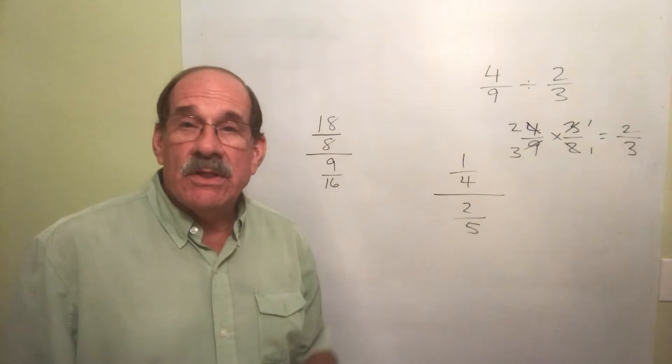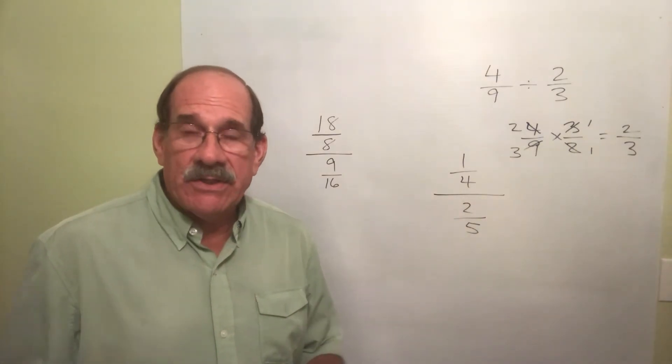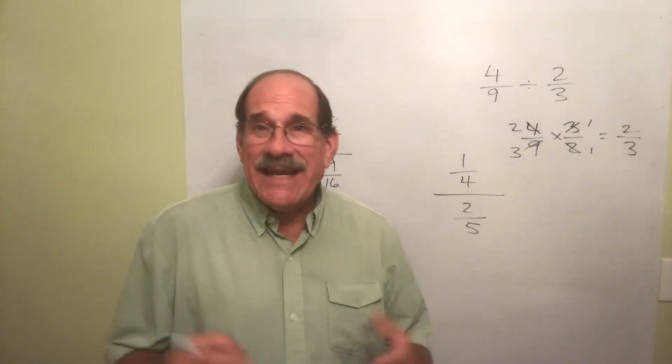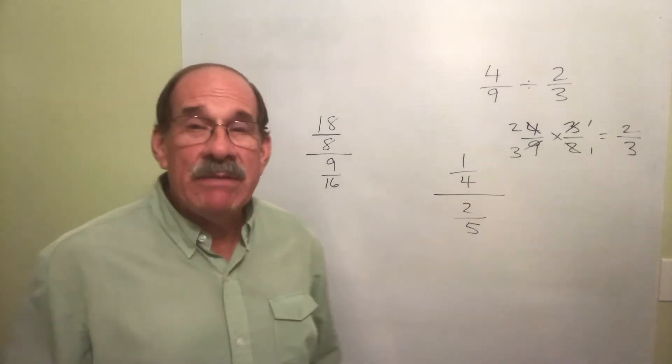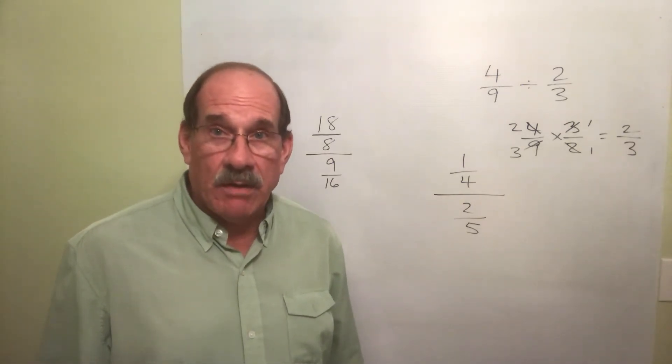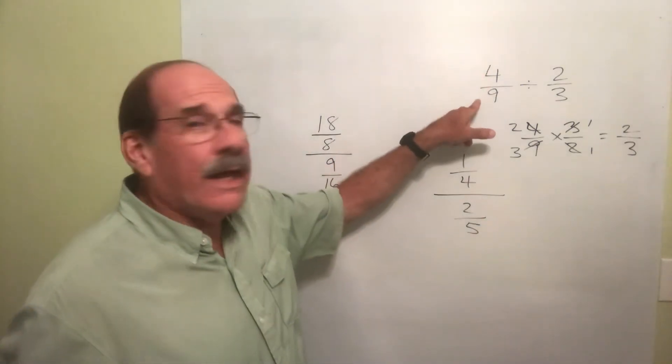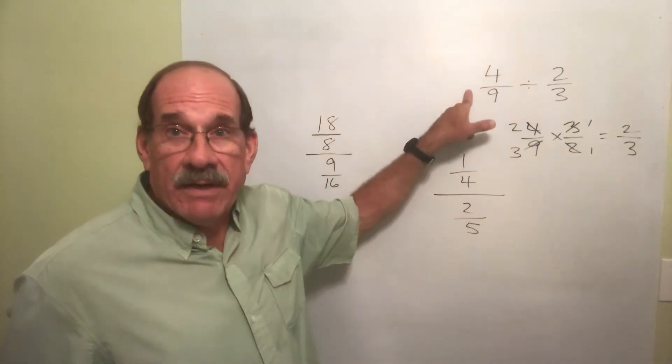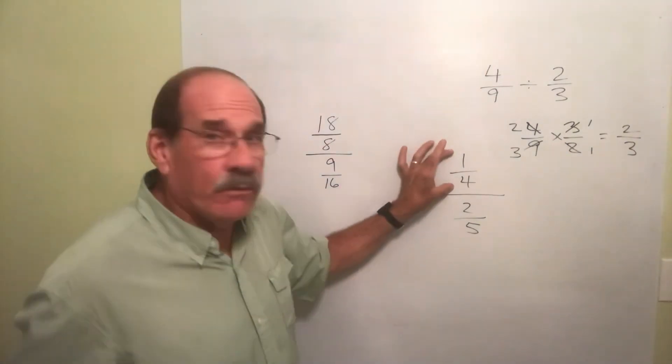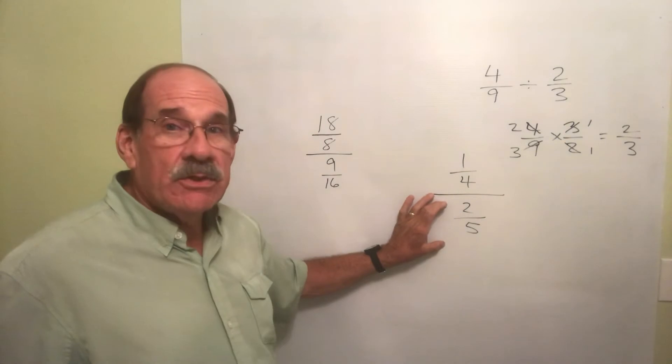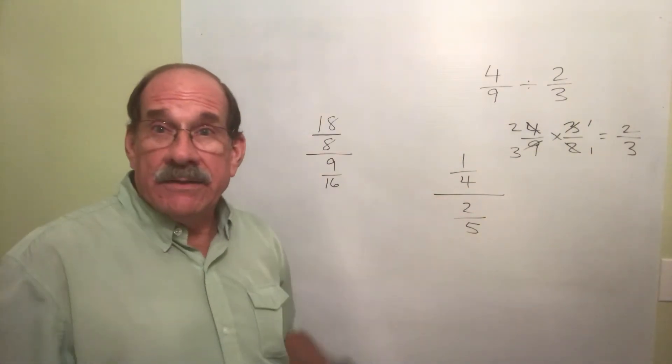So, but you treat that just like a division problem. As I said, all fractions, any fraction, every fraction can be thought of as a division problem. Even four ninths can be thought of as four divided by nine. So, this is one-fourth divided by two-fifths. Let's work it out that way.